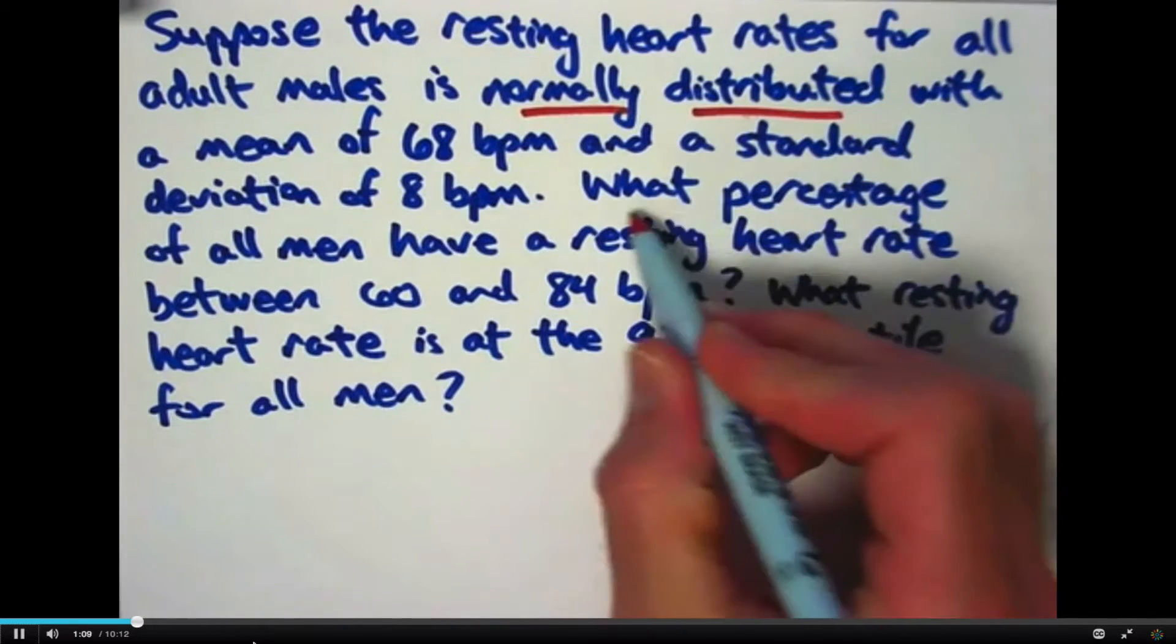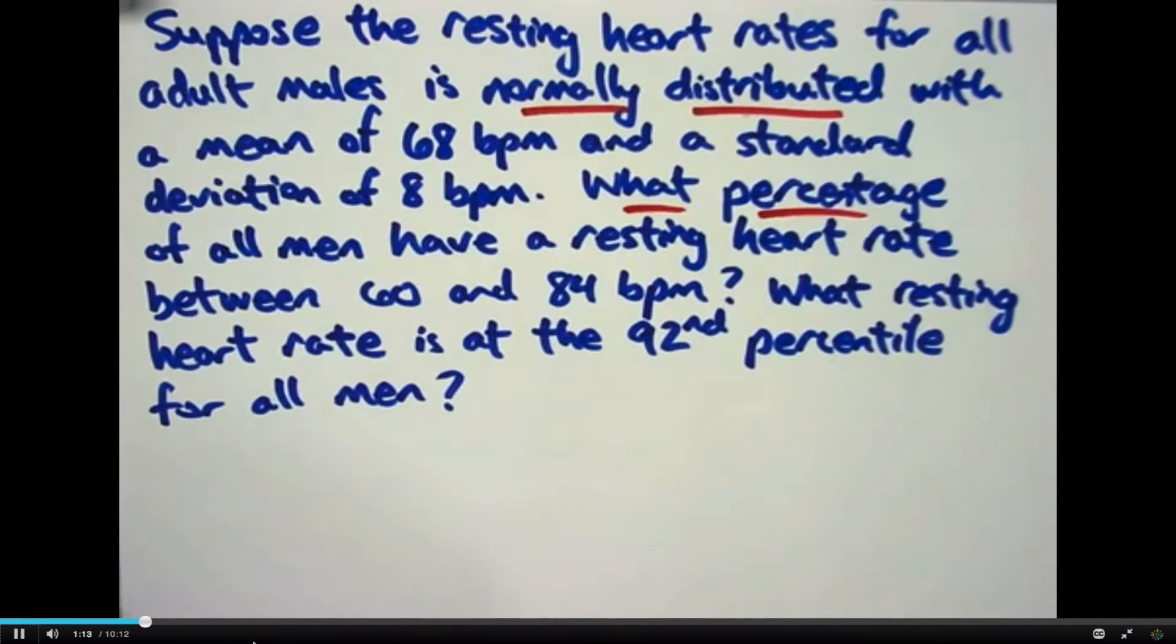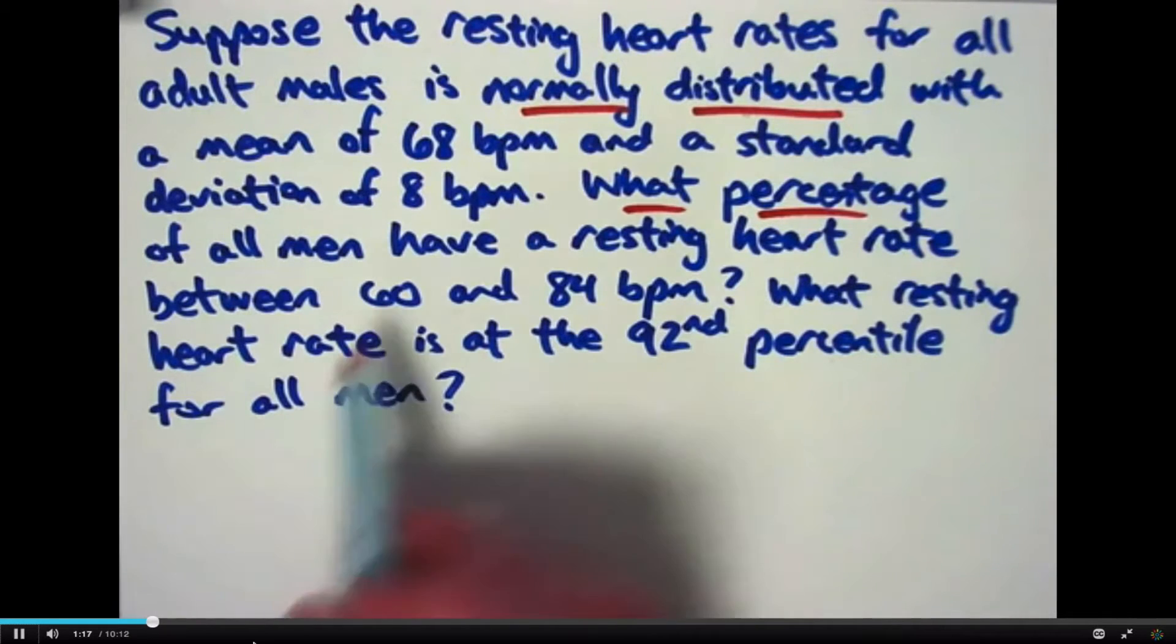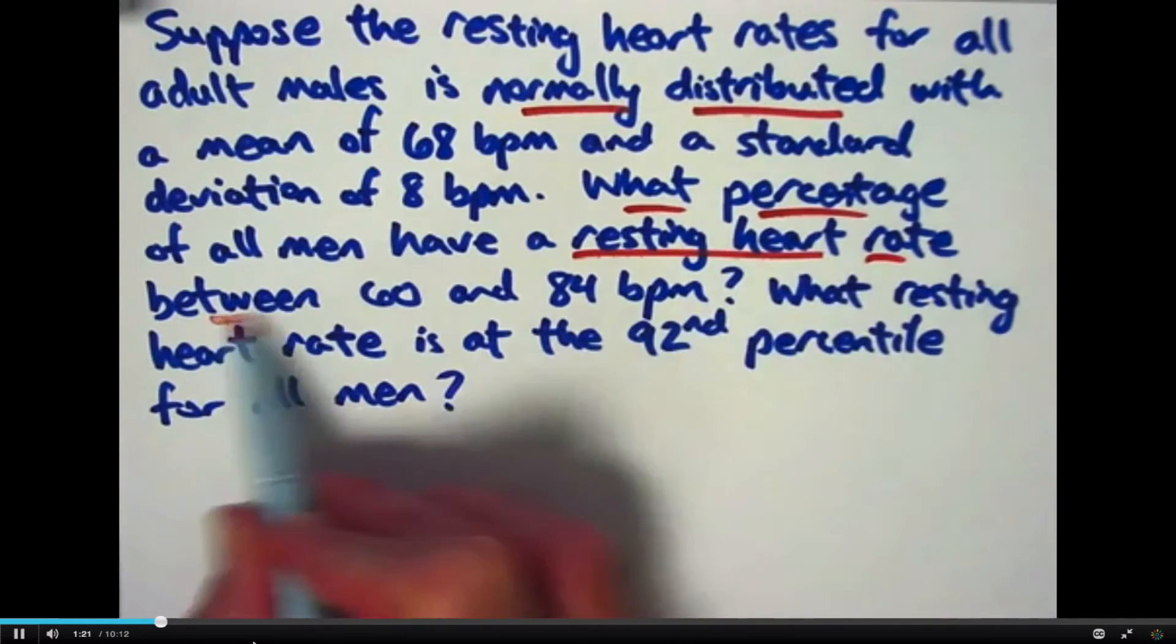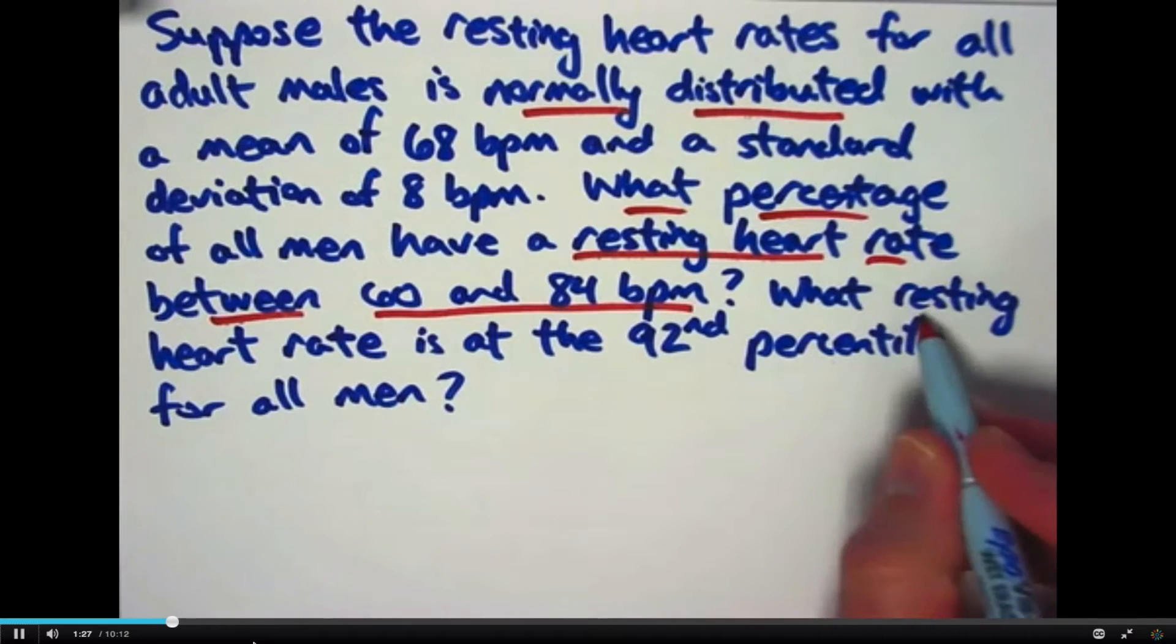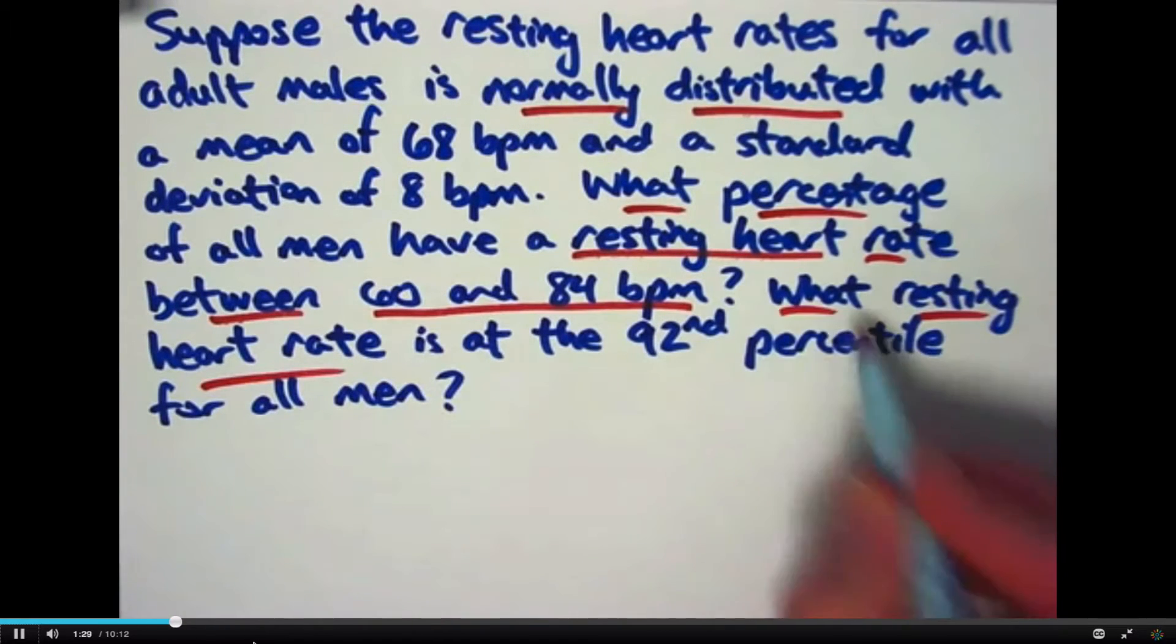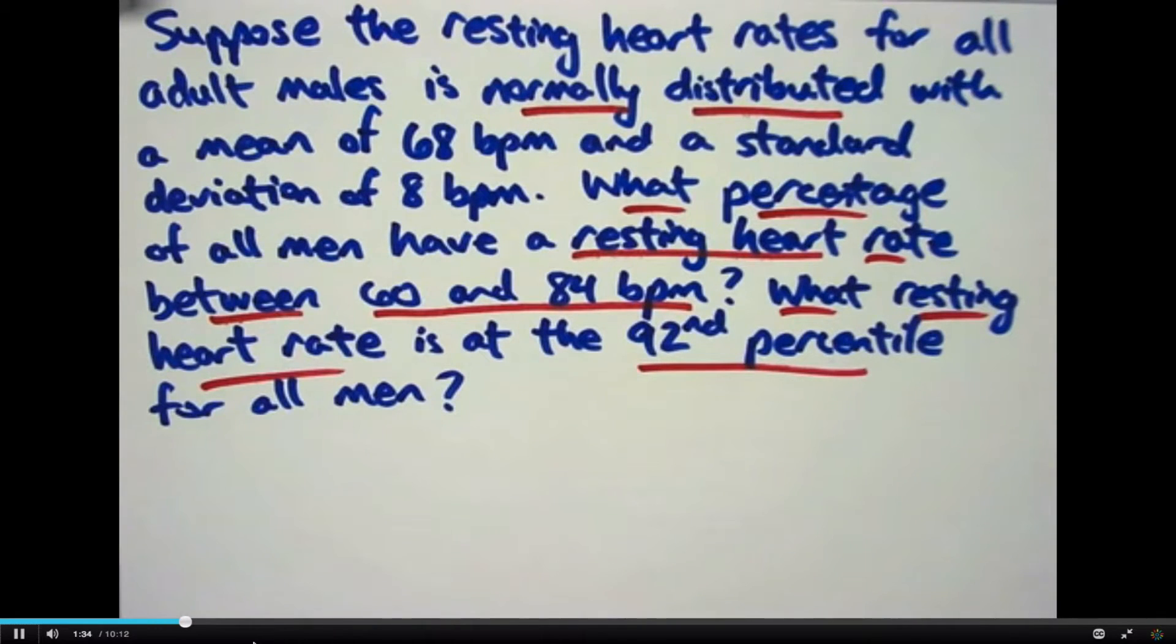Two questions. What percentage of all men, all adult males, I'm not saying whether it's in the United States or in the entire world, have a resting heart rate between 60 and 84 beats per minute? That's the first question. Second question, what resting heart rate is at the 92nd percentile for all men?